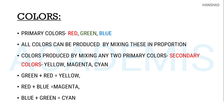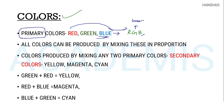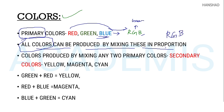This is a topic about colors. What do we call the primary colors? What does RGB mean? R stands for red, G stands for green, B stands for blue. Primary colors are red, green, and blue. All colors can be produced by mixing these in certain proportions. We mix these three colors — RGB — to make all the colors.